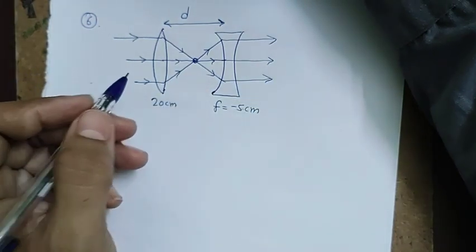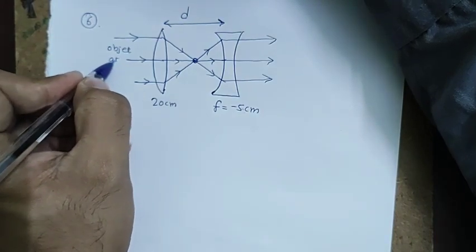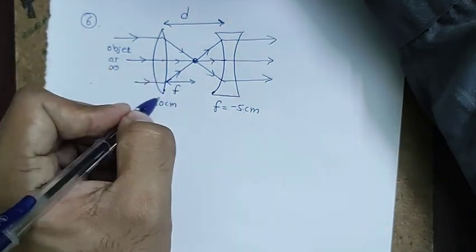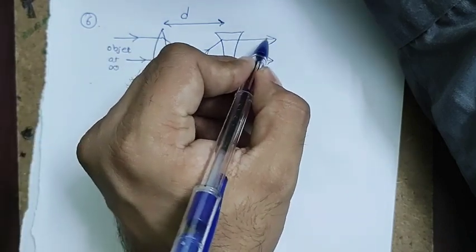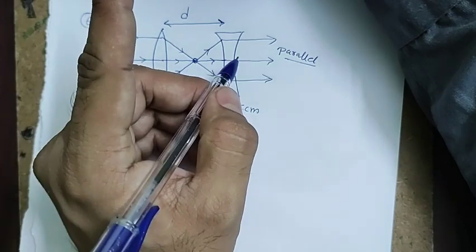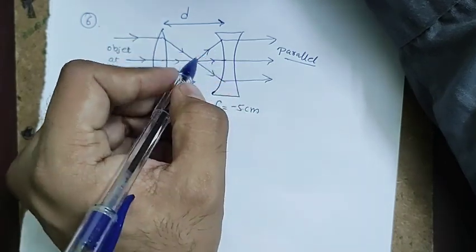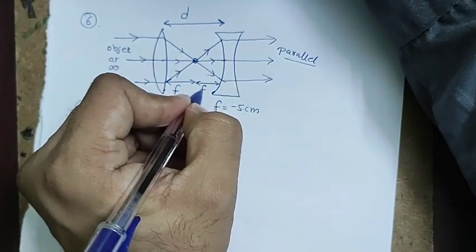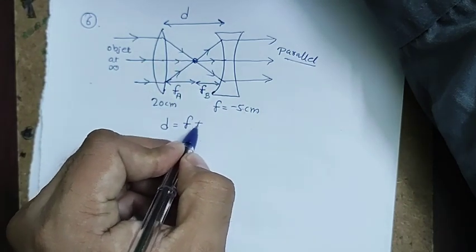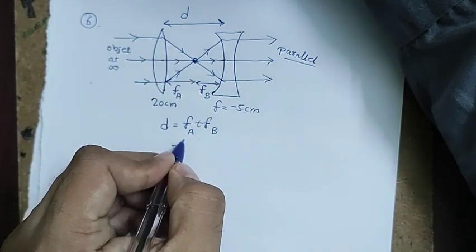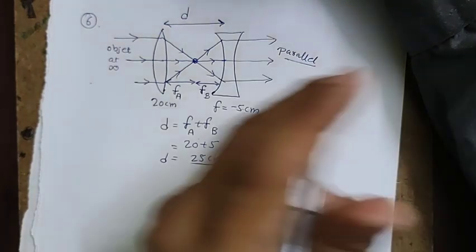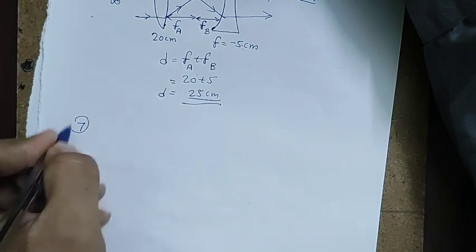When parallel rays enter the convex lens, they converge at its focus (20 cm). For rays to exit the concave lens parallel, they must appear to come from its focus (5 cm). Therefore d equals the sum of the two focal lengths: 20 + 5 = 25 centimeters.